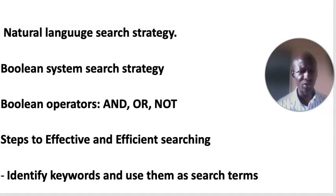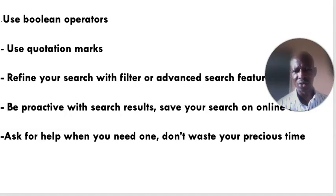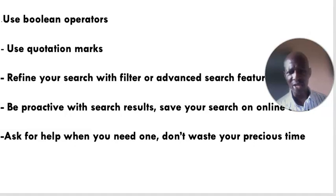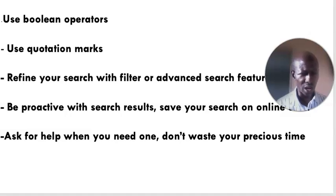Steps for effective searching: you have to identify your keywords and use them as search terms. You use Boolean operators as mentioned. You use quotation marks where necessary. You refine your search with filter or advanced search features — most especially academic databases have advanced search features that will allow you to streamline your search and get accurate results. You have to be proactive with search results, and sometimes you need to bookmark your results so that you don't forget where you got your search results from.